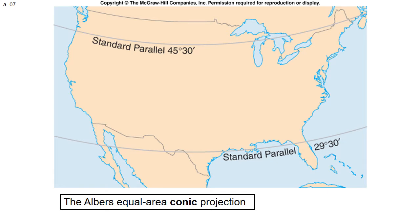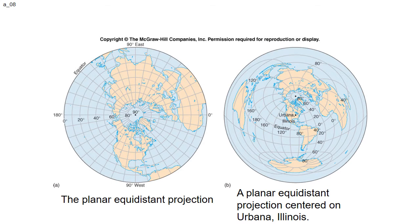Sometimes you need to measure things from a point, so an equidistant projection would work. You can see how this one would look like viewing a regular globe from top-down, but it can also be done mathematically.